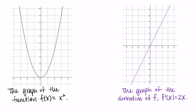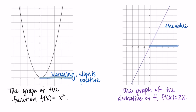Specifically, I want to look at where f is increasing and decreasing. Starting with increasing: from zero to infinity, x² is increasing. Increasing means the slope is positive, so we should see the derivative being positive — and we do. From zero to infinity on the derivative function, the output values are above the x-axis, corresponding to positive outputs.